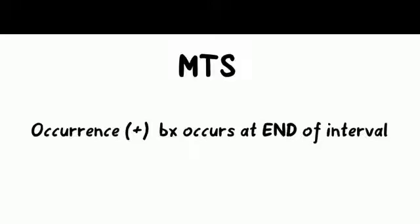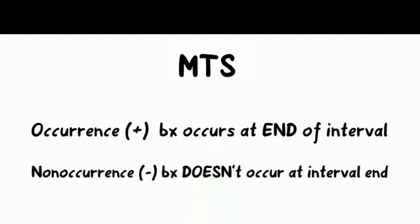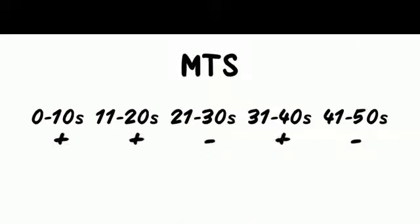Otherwise, record a non-occurrence. Record occurrence or non-occurrence for each interval. Lastly, calculate the percentage of occurrences by dividing the total number of intervals with an occurrence by the total number of intervals.